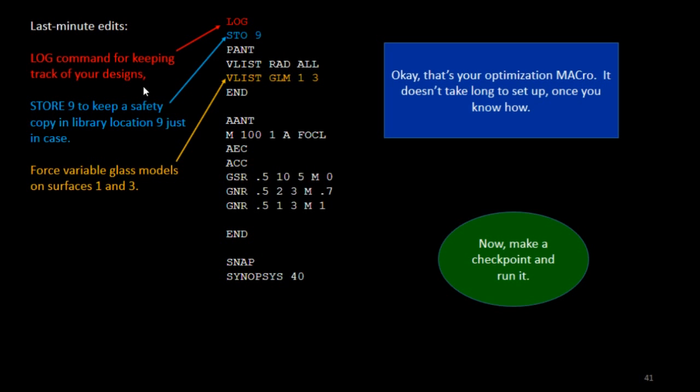That's going to be our macro. Let's make some more changes to it. I'll put a log command at the top. That just helps to keep track of things later. I'm going to put a store command here. It makes a safety copy. So if you really screw up, you can always get your lens back out of the library. And I'm going to add a new set of variables. A variable list, GLM, surfaces 1 and 3. It's the glass model variable. The program will vary the index and the Abbe number anywhere it wants on the glass chart. And it'll tell you where you want to go in the glass chart. That's your optimization macro, which you can really set up very quickly once you know how.